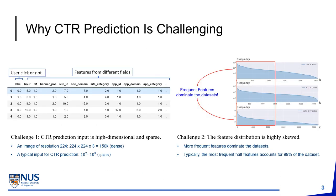What makes CTR prediction so challenging? The first challenge is that the input of CTR prediction is high-dimensional and sparse. A typical input is made up of feature fields converted by one-hot encoding, whose dimension can range from 10 million to a billion. The second challenge is that feature distribution is highly skewed — more frequent features dominate the whole dataset.